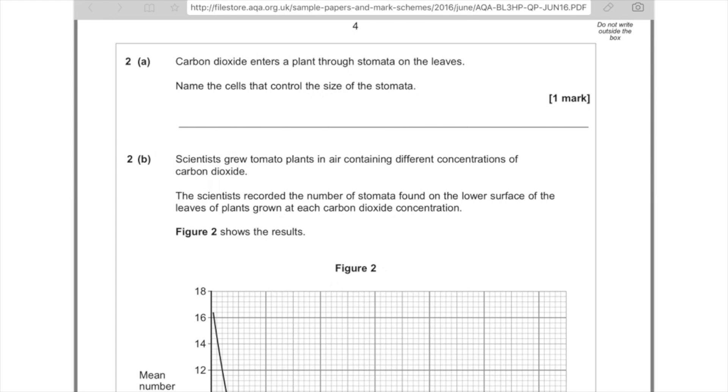So I'm going to start by answering some exam questions. So 2A, carbon dioxide enters a plant through stomata on the leaves. Name the cells that control the size of the stomata. Well, I just mentioned that in the video and remember those are the guard cells.